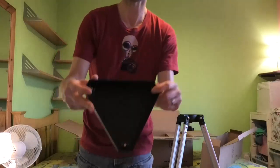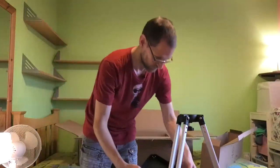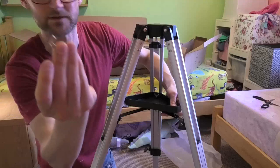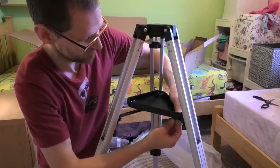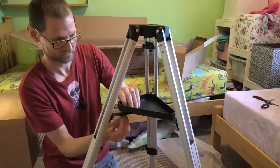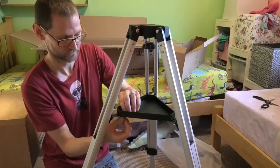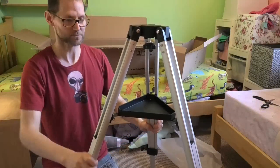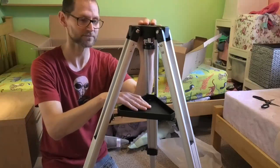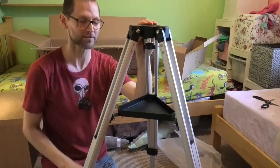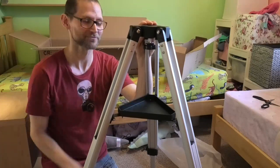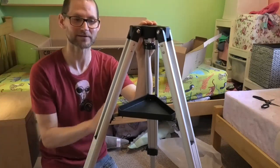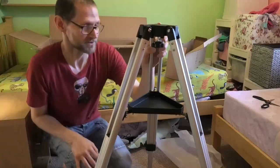So you attach that via three wingnuts onto here. Grab a wingnut, coincidentally that used to be my nickname because my ears stick out. So that's the spreader plate on, and then you can use that for placing eyepieces, red light torch, things like that. Right, let's grab another box and see what else we've got.